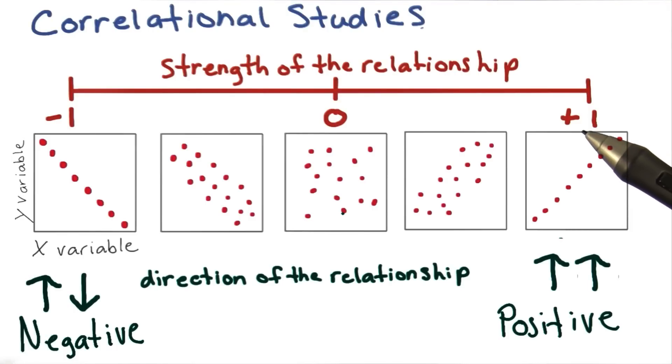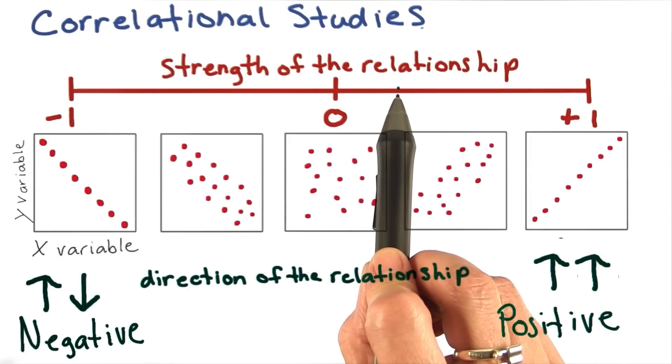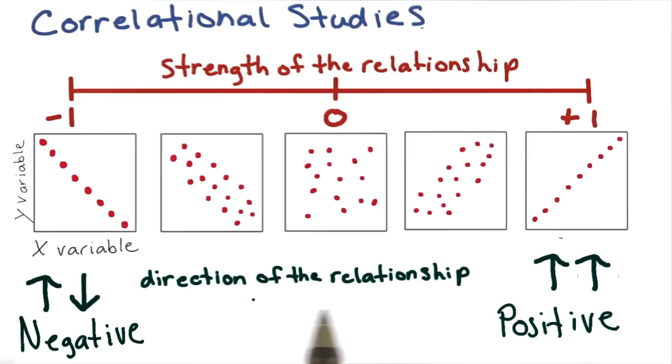The results of correlational studies give us what is called a correlation coefficient. Correlations tell us two things: the strength of the relationship as well as the direction of the relationship.